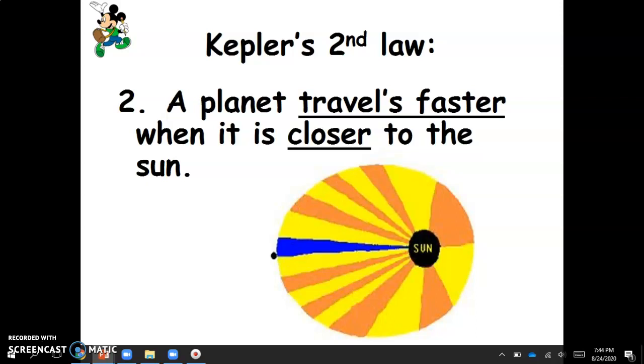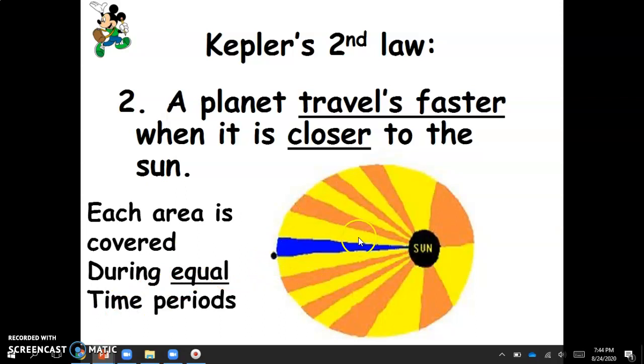Now the second law states that a planet travels faster when it's closer to the sun. So what does that mean? That means when a planet is over here and it's far away, it can be moving pretty slow. And we know that we take 365 days to make it around the sun. But we're moving along. And then as we get closer to the sun, we're going to actually speed up. So we're going to speed up a little bit. Then once we get back around the sun, we're going to go slower again. So the closer a planet is to the sun, the faster it'll travel.